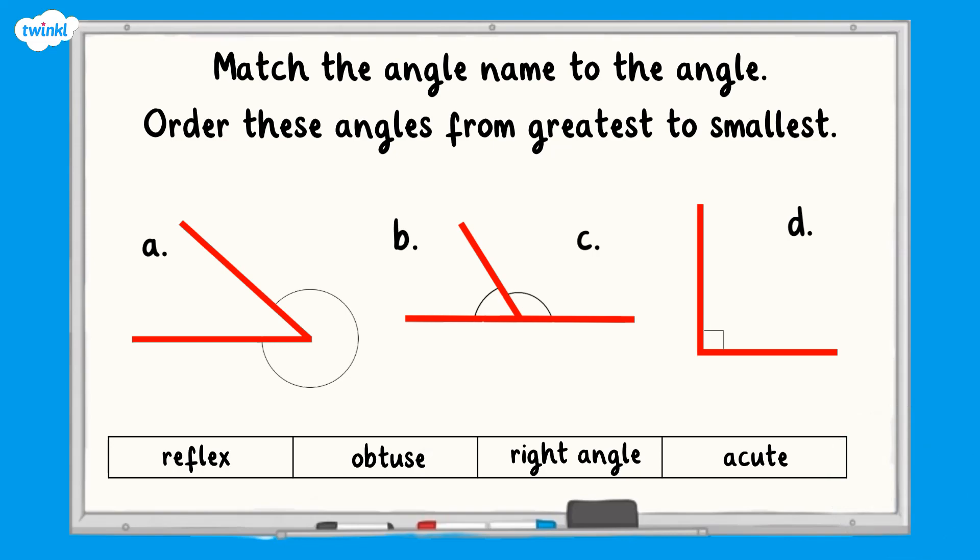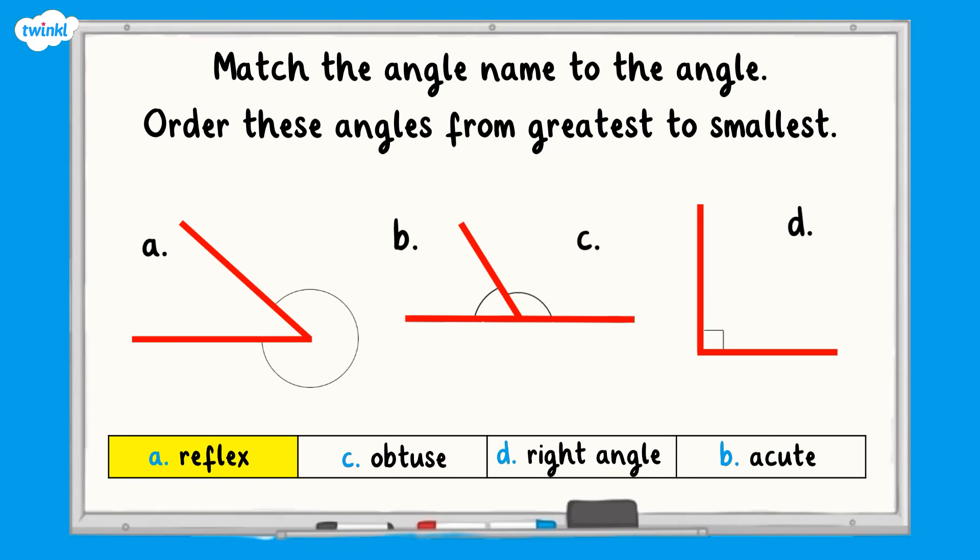From greatest to smallest the angles are A, reflex angle; C, obtuse angle; D, right angle; B, acute angle.